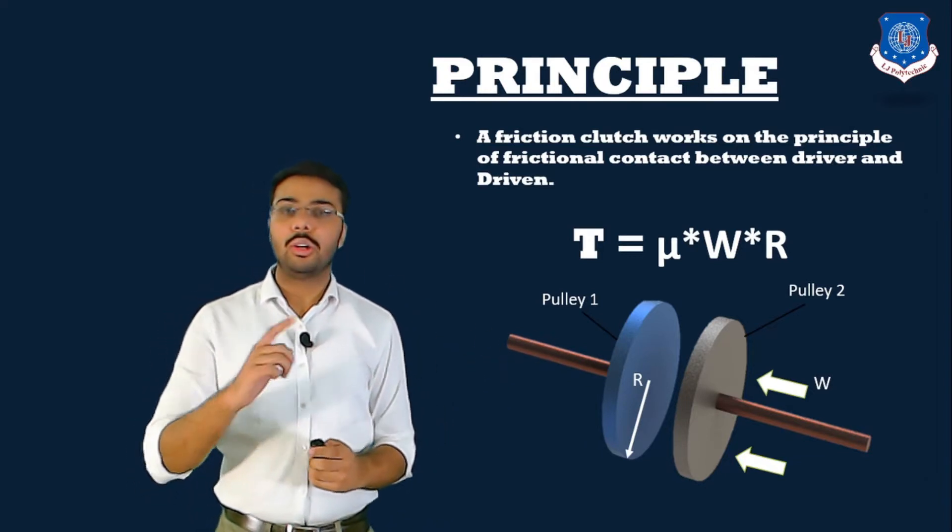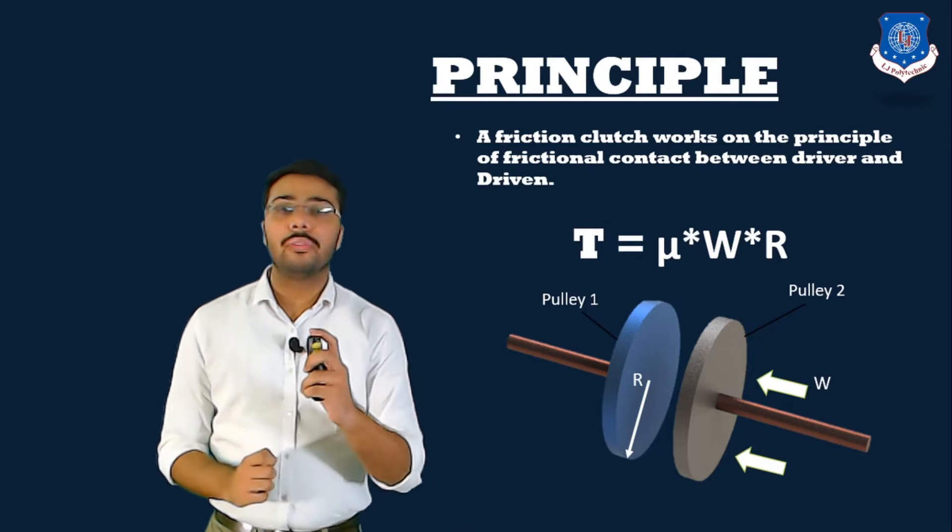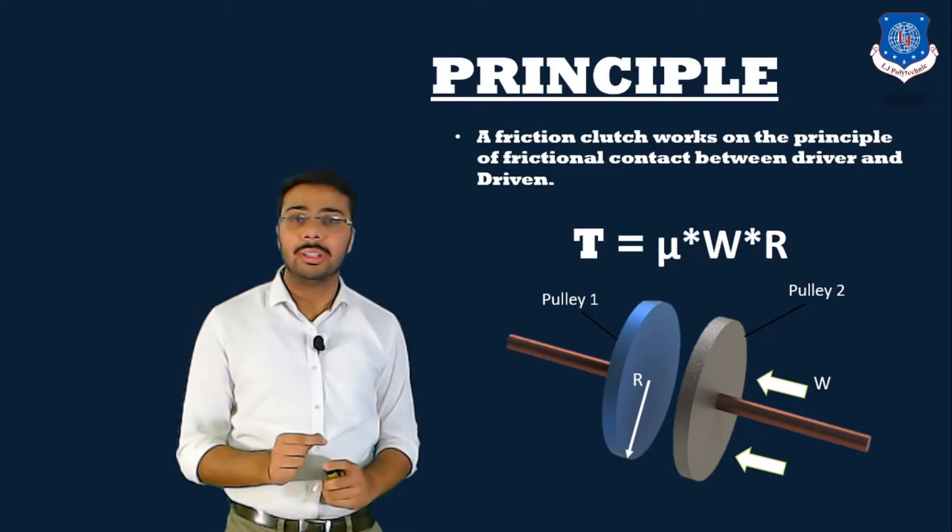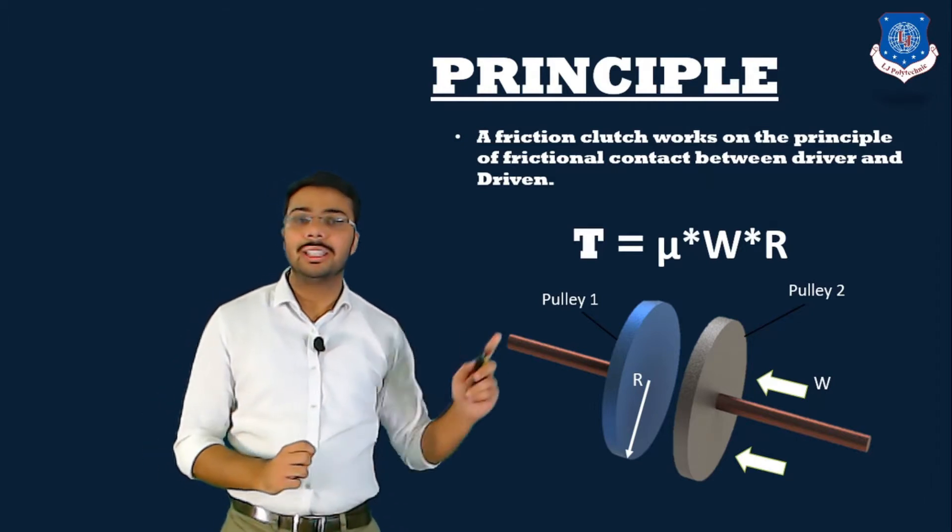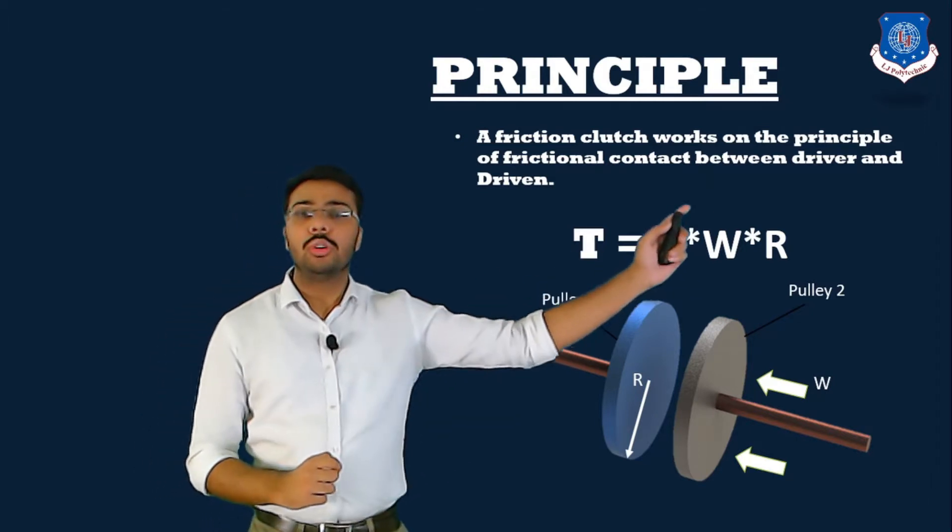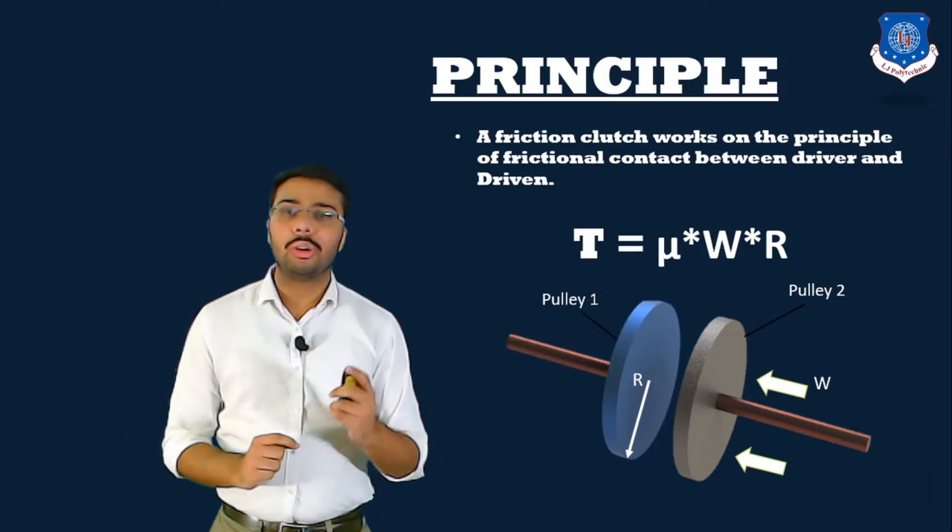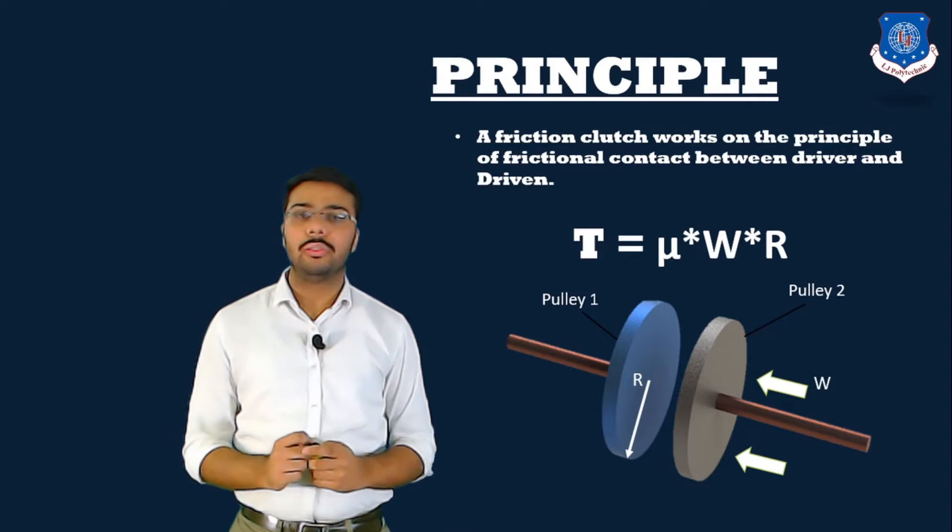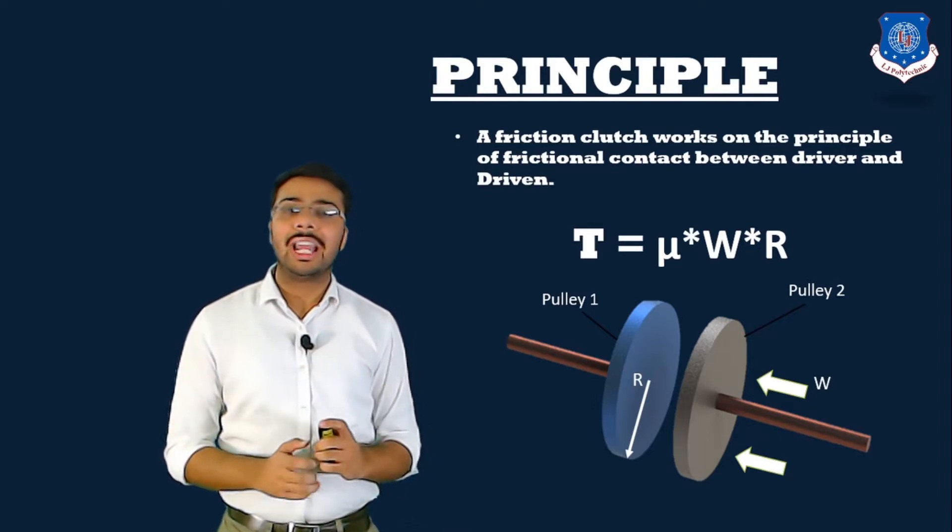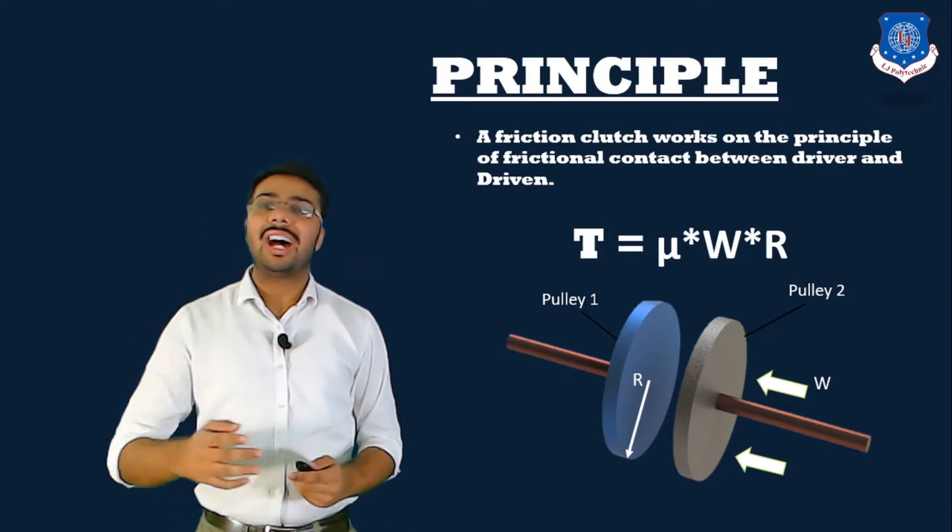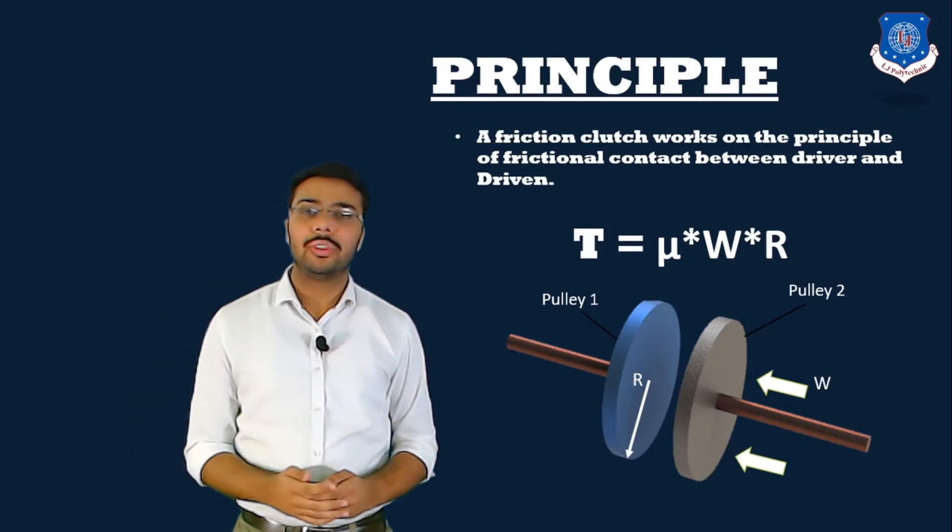Why? Because of friction, or better yet, frictional contact. Well, this is the principle of friction clutch. Based on this principle, an equation is formulated: T equals Mu into W into R, where T is torque to be transmitted, Mu is coefficient of friction, W is the actual load that is provided to make it come in contact with each other, and R is the radius of contact surface area.